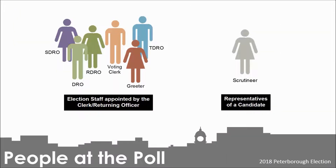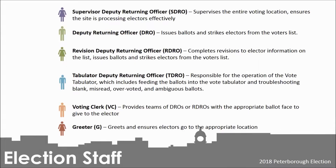The following section outlines some people electors may see at the voting location. The Supervisor and Deputy Returning Officer supervise the entire voting location and ensure the site is processing electors effectively. The Deputy Returning Officer issues ballots and strikes electors from the voters list. The Revision Deputy Returning Officer completes revisions to elector information and also issues ballots. The Tabulator Deputy Returning Officer is responsible for the operation of the vote tabulator, and troubleshoots blank, misread, overvoted, or ambiguous ballots. The voting clerk provides teams of DROs with the appropriate ballot faces, and the greeter ensures electors go to the appropriate location.